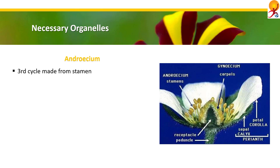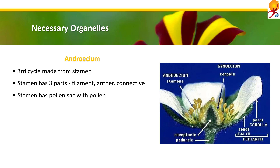Androecium is the third whorl, which is made from stamens. The stamen is the male sex organ of the flower. Each and every stamen has three parts: filament, anther, and connective. The vital component of androecium is the stamen, in which pollen grains are found in pollen sacs.